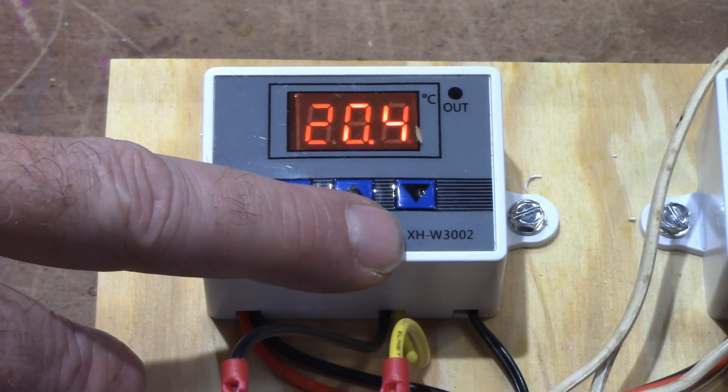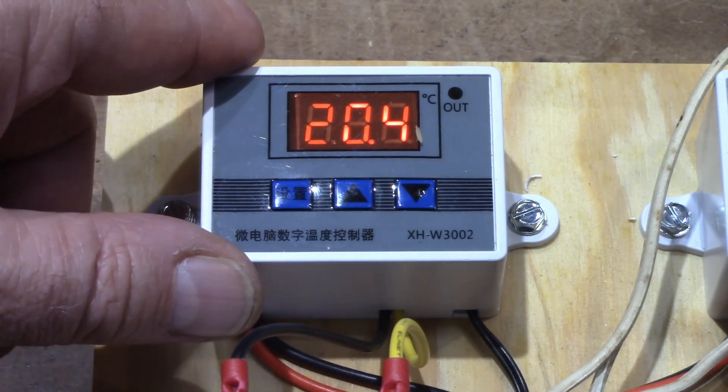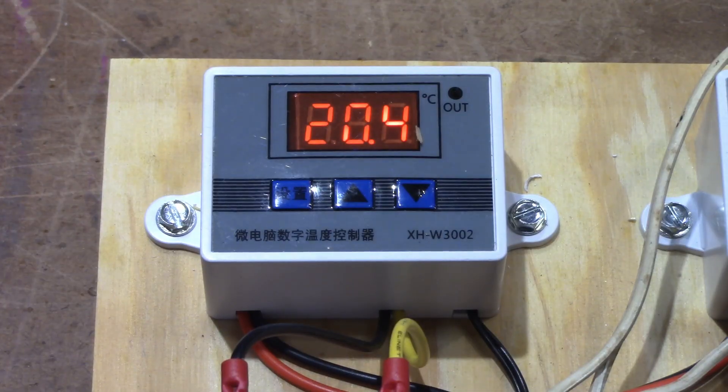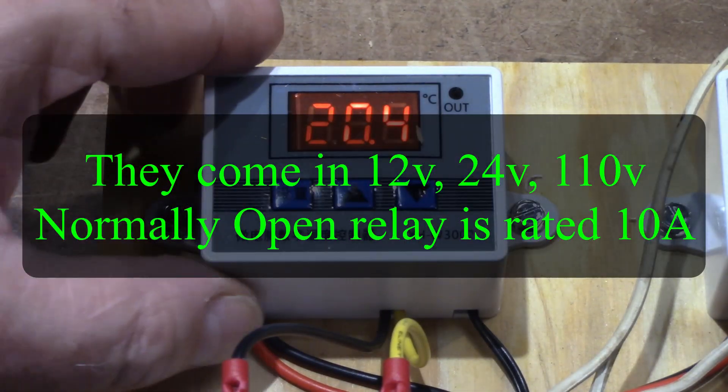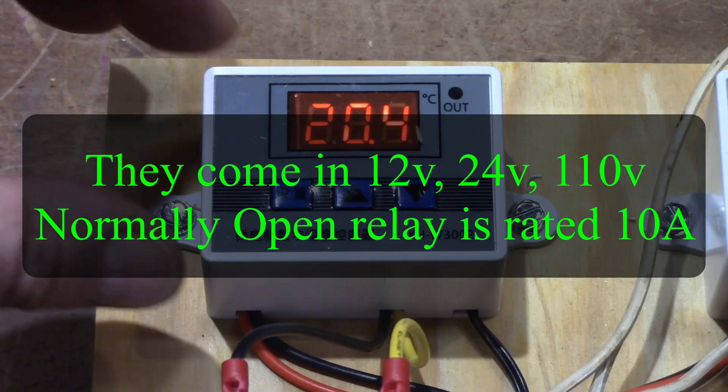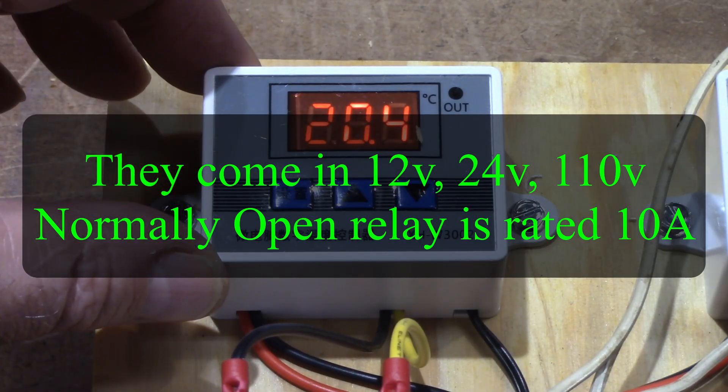This is an XHW3002 temperature control module. These are very simple and easy to program. I will link these in the description in case you're interested. At this moment, they're about $5 or $6 a piece.